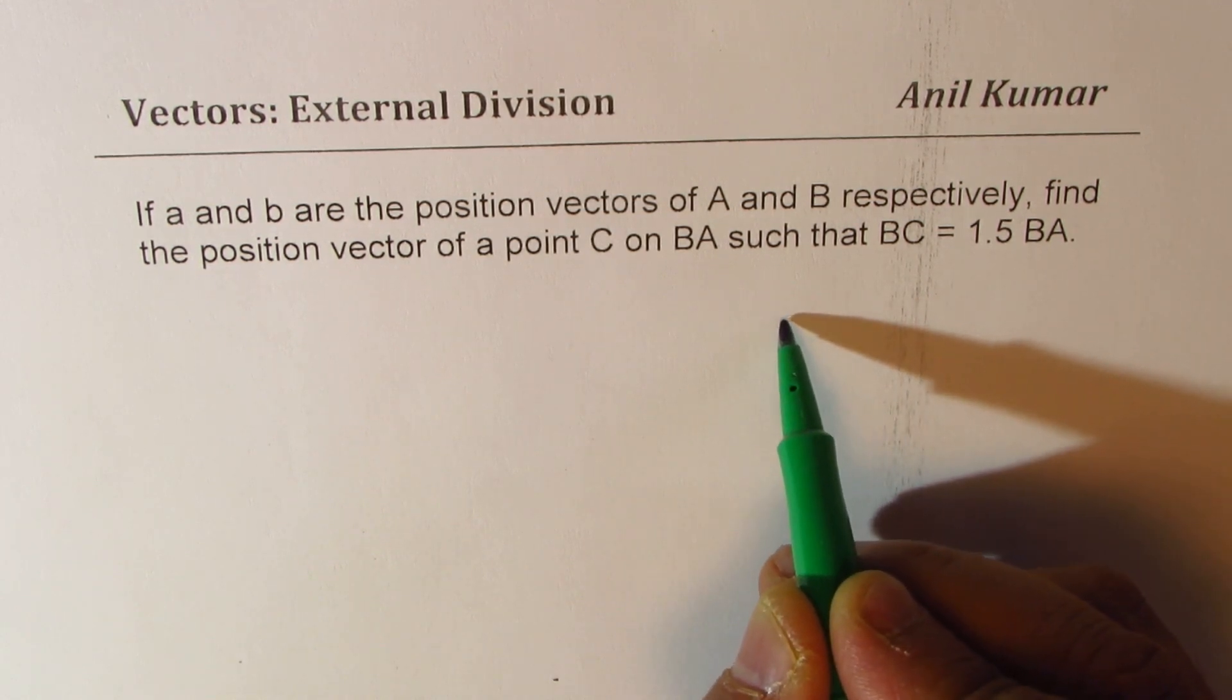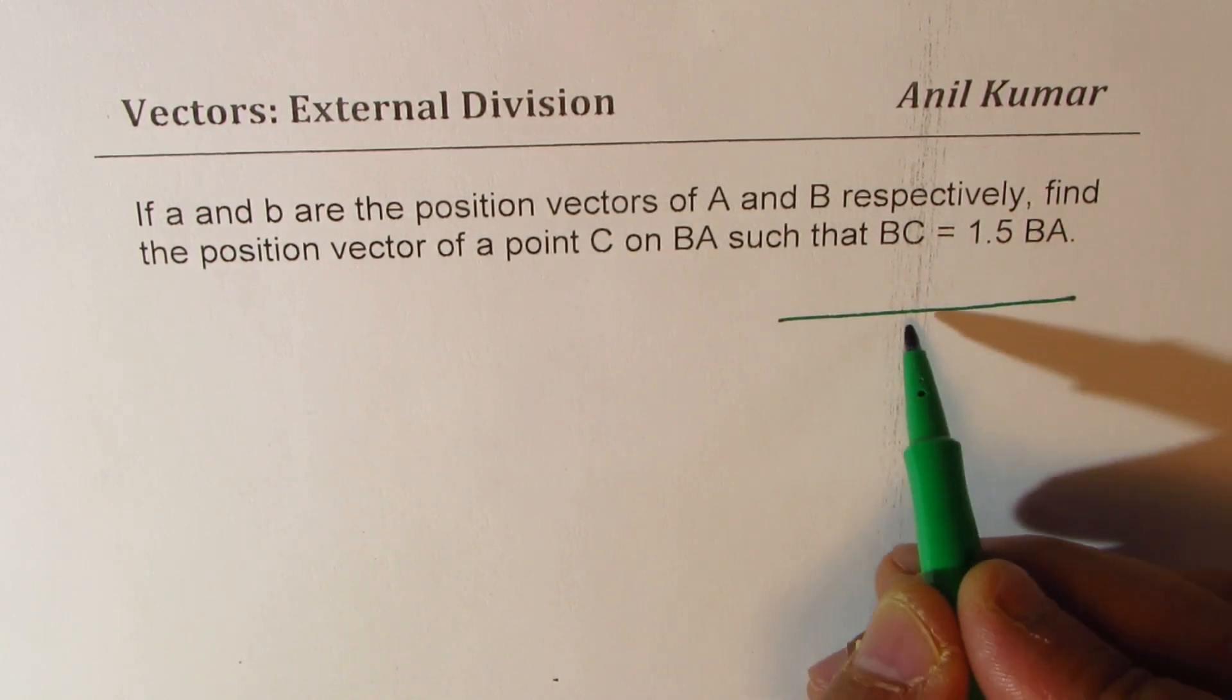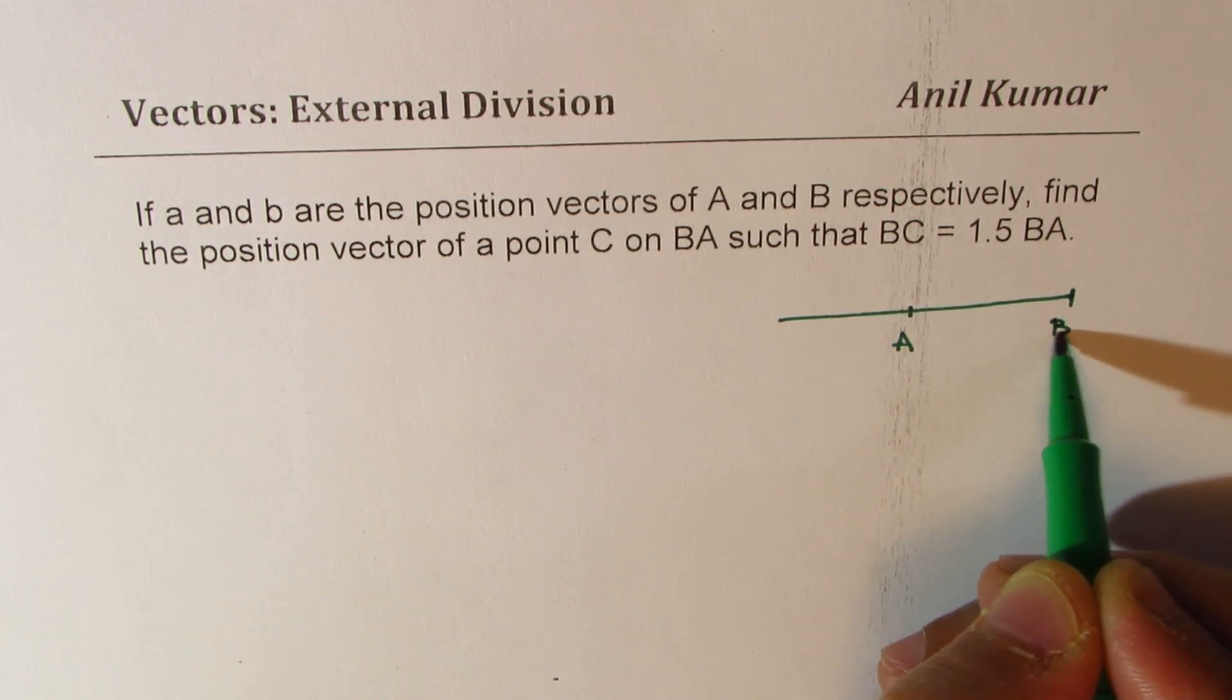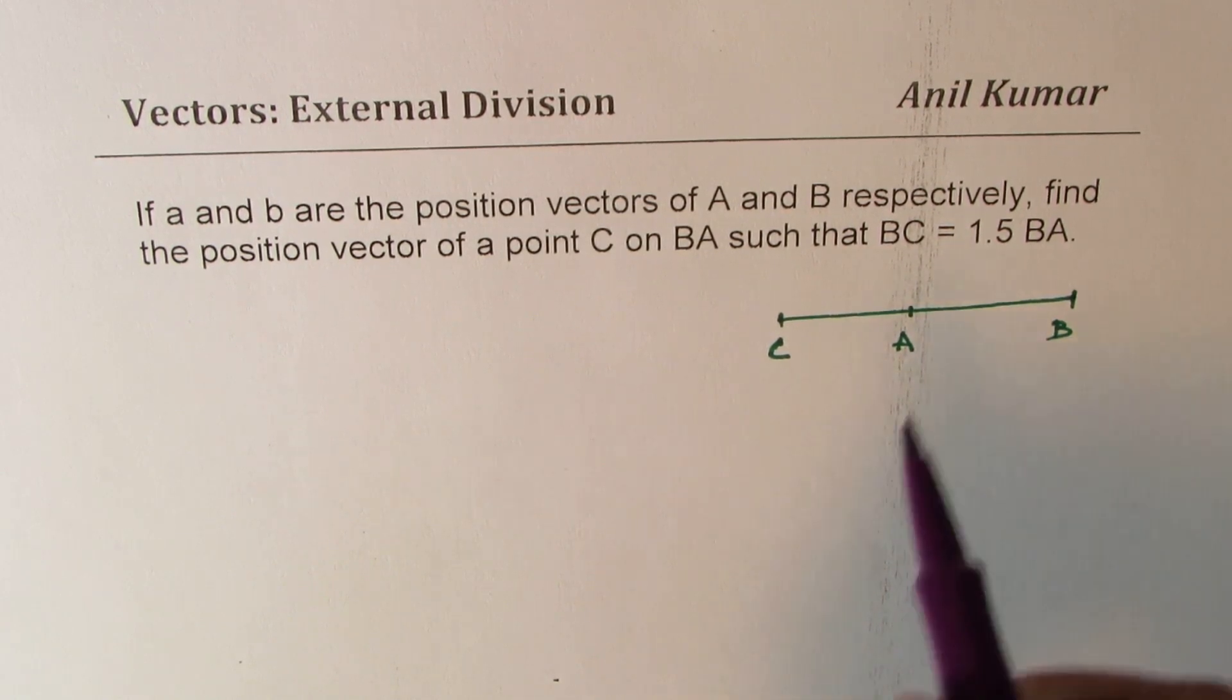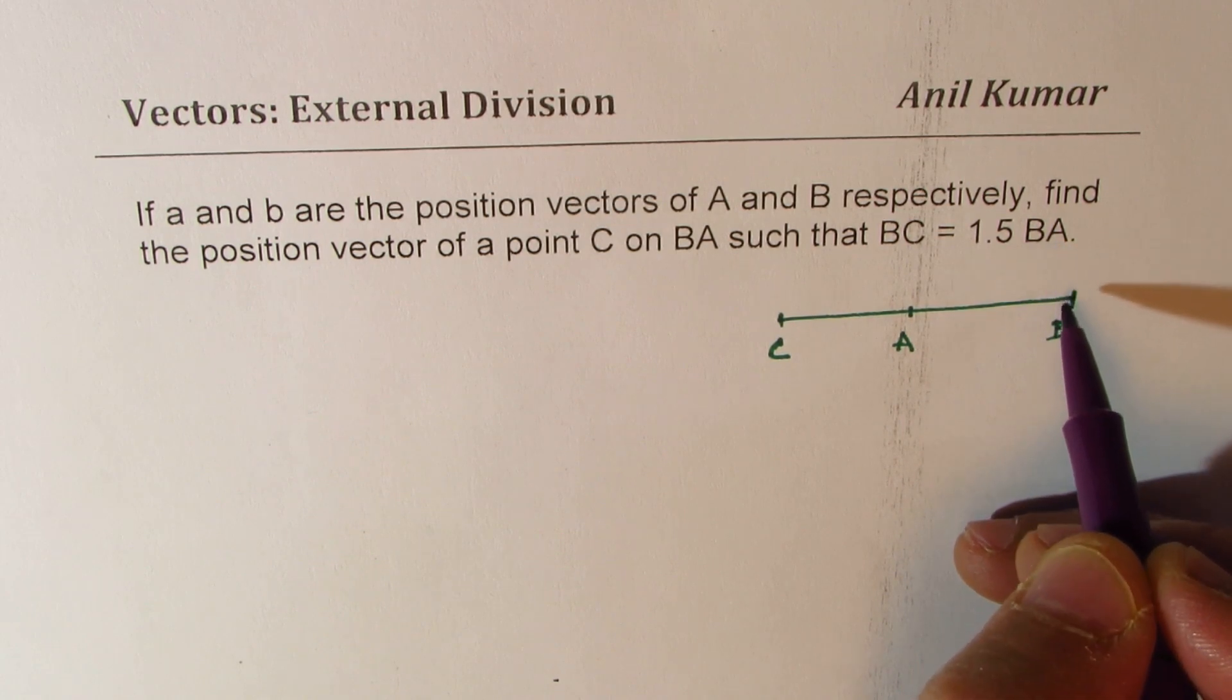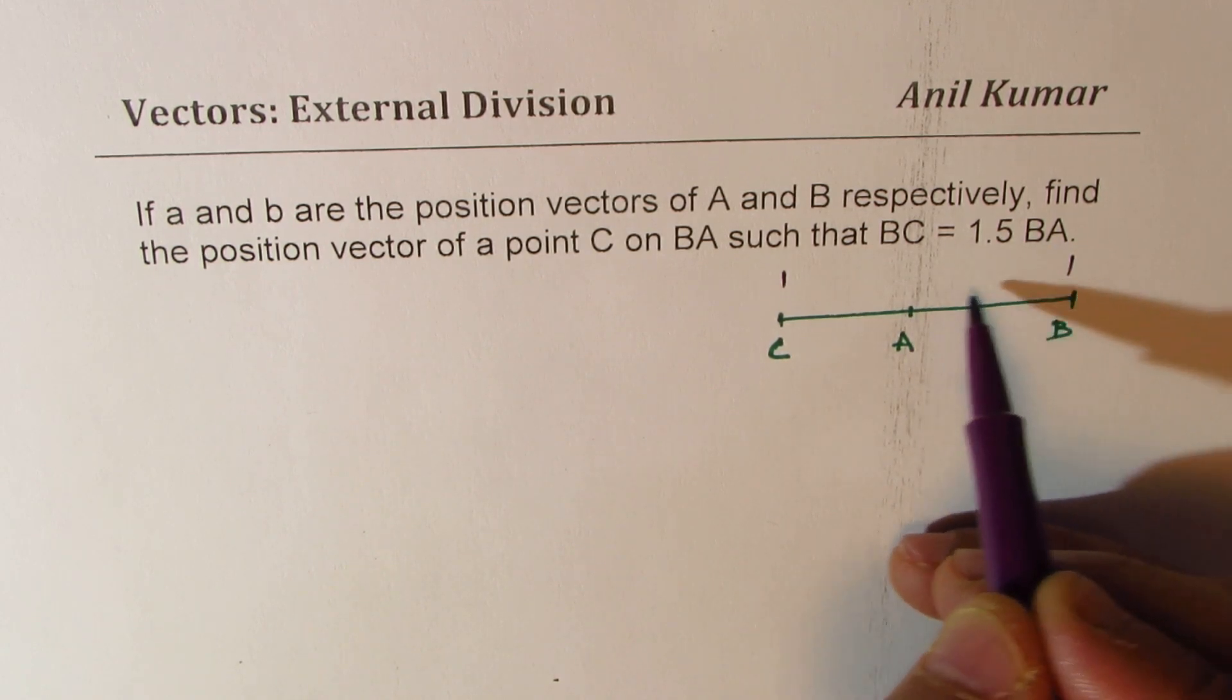So let's make a small diagram here. What we have here is A to B and a point C here. We are given that BC is equals to 1.5 times BA. That means this side is 1.5 times BA.